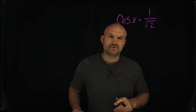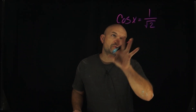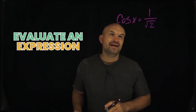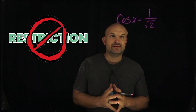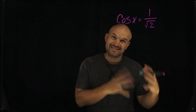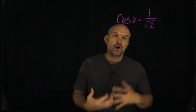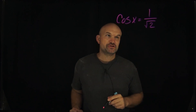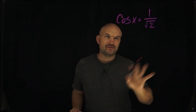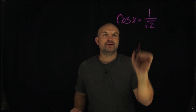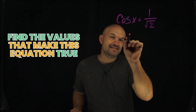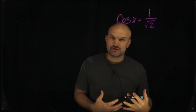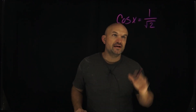What's up guys. One thing that trips up students a lot of times is when we need to evaluate an expression and we have a restriction — either we evaluate the restriction from 0 to 2pi, or find all of the solutions that make this equation true. In this video, I want to find the values that make this equation true, and we're going to do that for a restriction as well as for all the values.